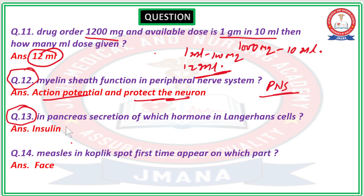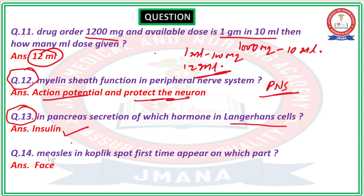Question number 13: In the pancreas, which hormone is secreted by the Langerhans cells? The right answer is insulin. Insulin is secreted from the Langerhans cells of the pancreas and functions to decrease or maintain glucose levels in the body.